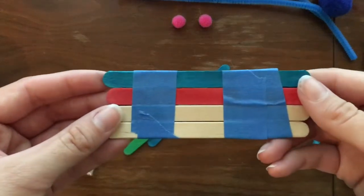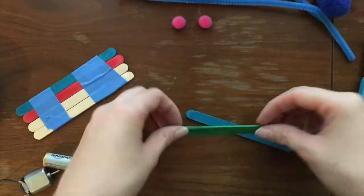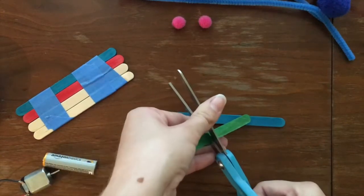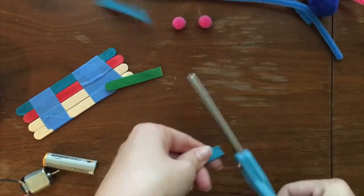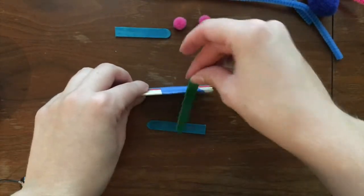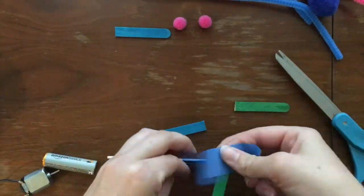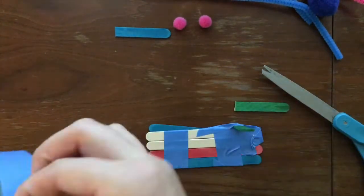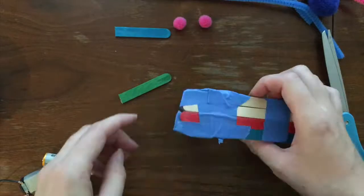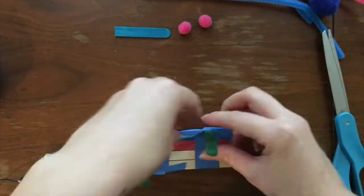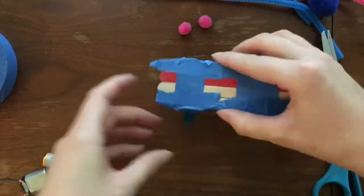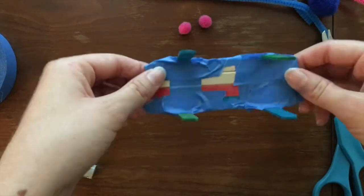All right, so we have the body done. Now we're going to go ahead and add some legs. So what I'm going to do is cut these popsicle sticks in half. Now we have four legs so we're going to go ahead and tape those on. All right, so now we have legs on our little WobbleBot.